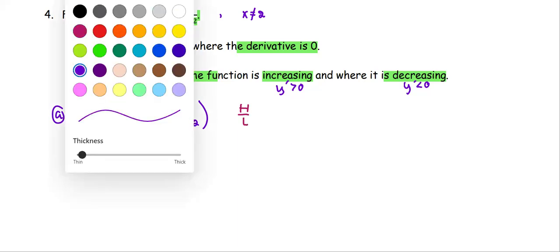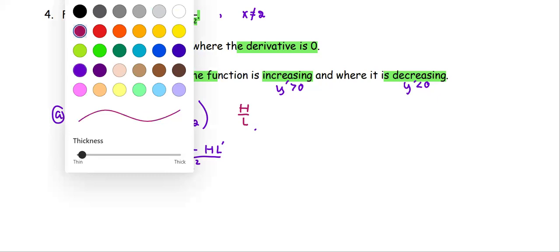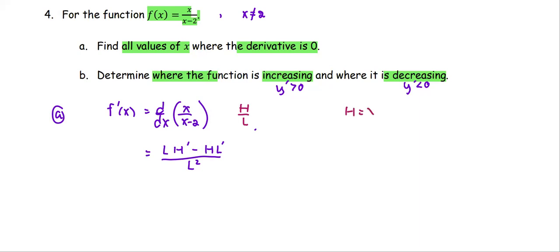The derivative is low d(high) minus high d(low), draw the line, low squared. On the side note, let's break it out into pieces. The high is x, the low is x-2, d(high) is 1, d(low) is 1.